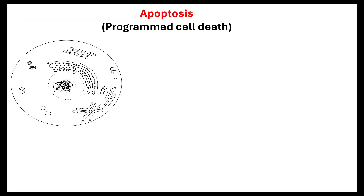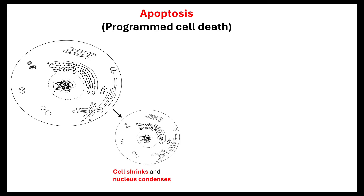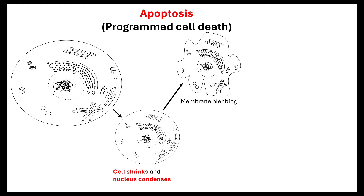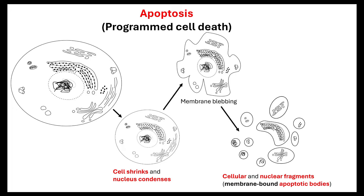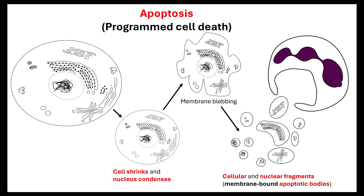So what is apoptosis? Apoptosis is programmed cell death. As an organism is developing and growing, it will produce lots of cells, but some of those cells are not needed, so it will need to get rid of them through the process of apoptosis. The first thing that happens is the cells will shrink and the nucleus will condense. The membrane will start to bleb in, surrounding the organelles, and you end up with cellular and nuclear fragments — membrane-bound apoptotic bodies — which neutrophils can come along and engulf and digest.